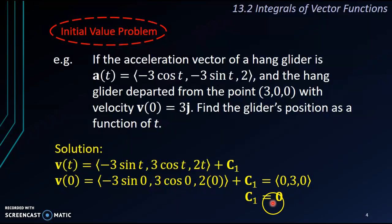Therefore, by substituting 0 vector into the C₁, we'll get our velocity as (-3 sin t, 3 cos t, 2t).